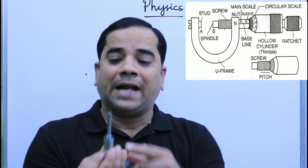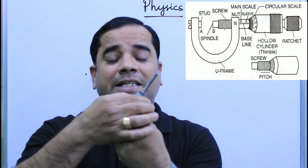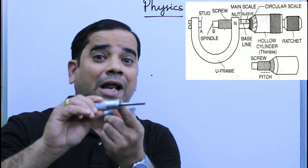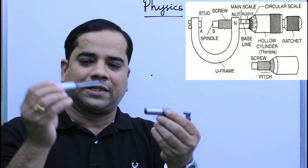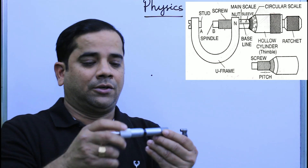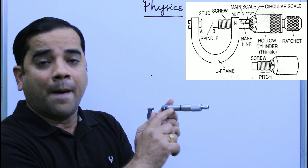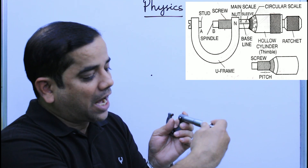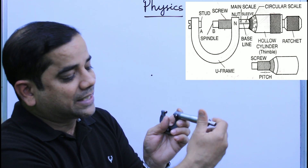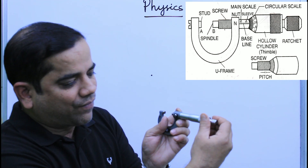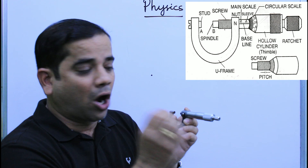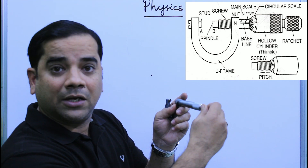When I take it out, you can see it is threaded inside. The rod, which is flat at one end, goes through the sleeve. The sleeve is also threaded from inside. The hollow cylinder has the circular scale engraved on it. This hollow cylinder sits over the main scale of the screw gauge. The sleeve carries the main scale, and as you rotate the hollow cylinder, it moves along the main scale.